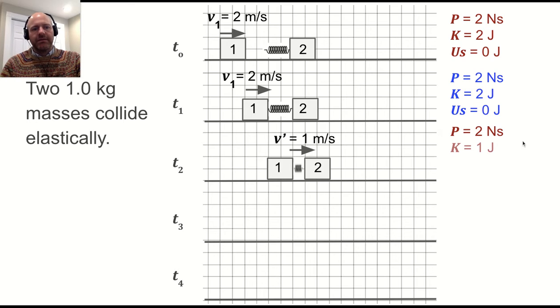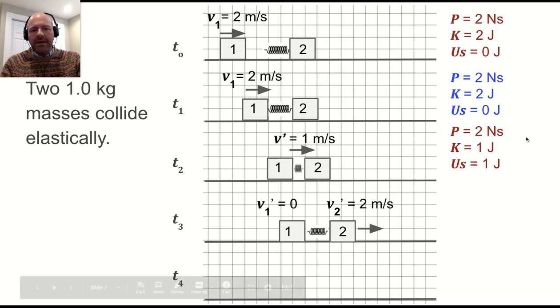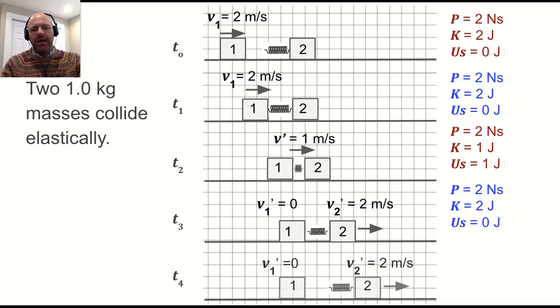You can't have anything else, but we have a smaller amount of kinetic energy. Then we have some spring potential energy. Some of the energy is in the spring. Then after they push off of each other, the momentum is again what it was before. The kinetic energy is what it was before. The spring potential energy is back to zero.